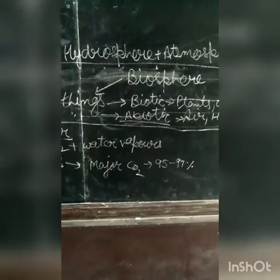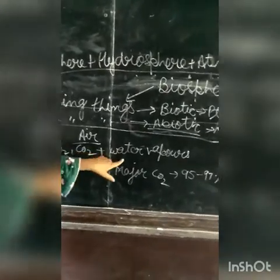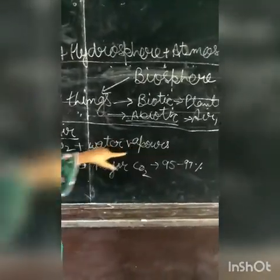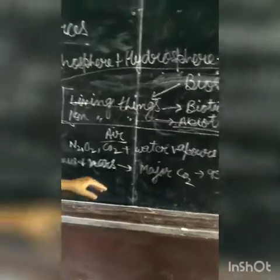The abiotic component is air. The composition of air — air consists of nitrogen, oxygen, carbon dioxide, water, and other gases.